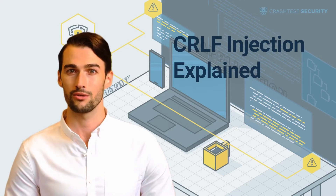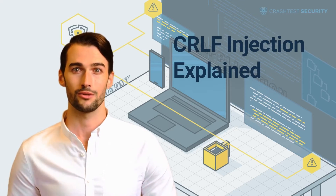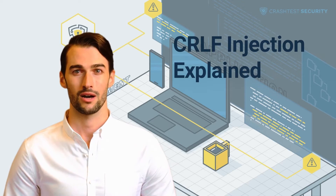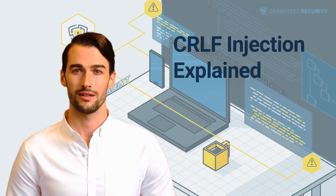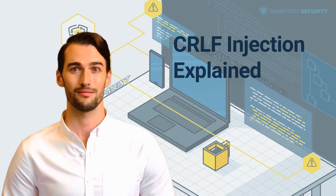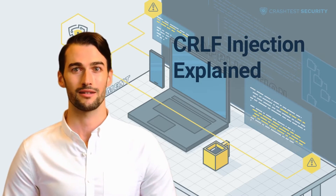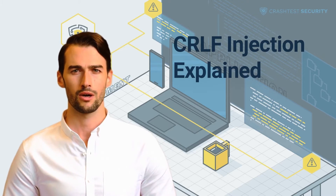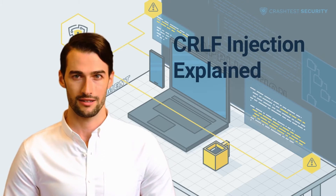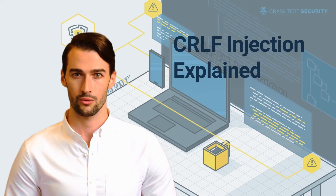CRLF stands for the special characters Carriage Return and Line Feed, two elements used in specific operating systems such as Windows, and various internet protocols like HTTP. Carriage Return signifies the end of a line, whereas Line Feed denotes a new line. Usually, the purpose of the CRLF combination is to signal where an object in a text stream ends or begins.